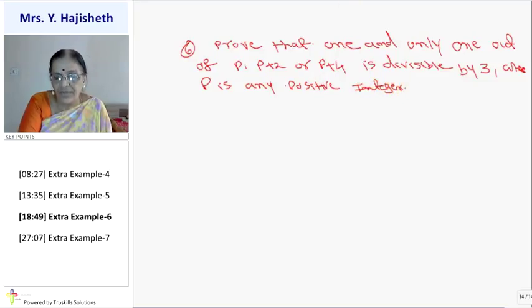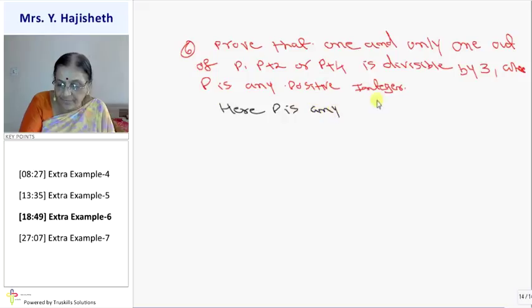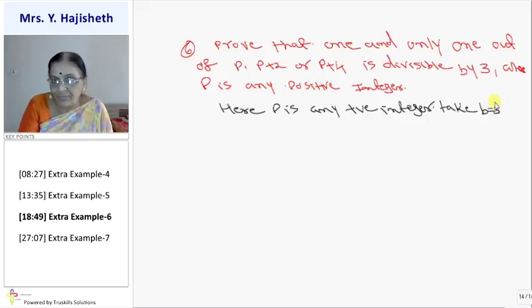This sum is a 2 marker. Here p is any positive integer. Take b is 3 and apply Euclid division lemma.